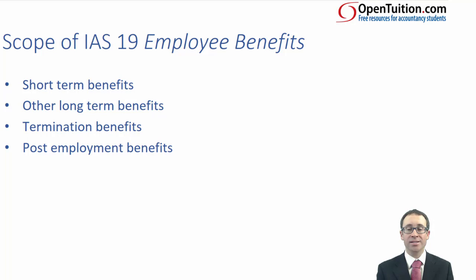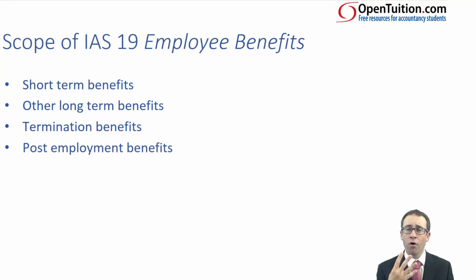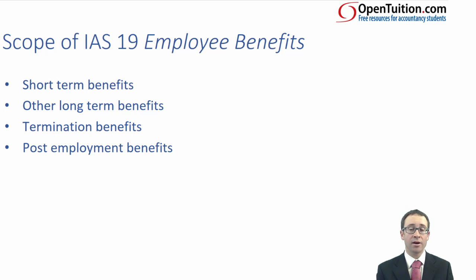If we look at the scope of IAS 19 and what it covers, it goes through there and covers four aspects. It looks at what's referred to as short-term benefits — essentially your wages, your salaries, and potentially any holiday pay.